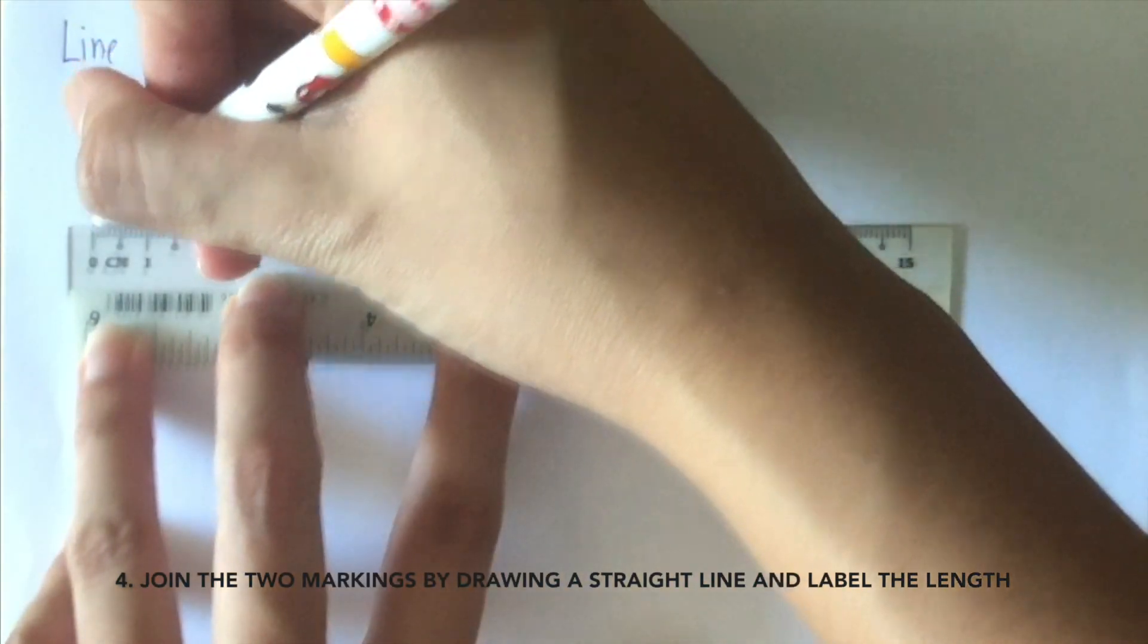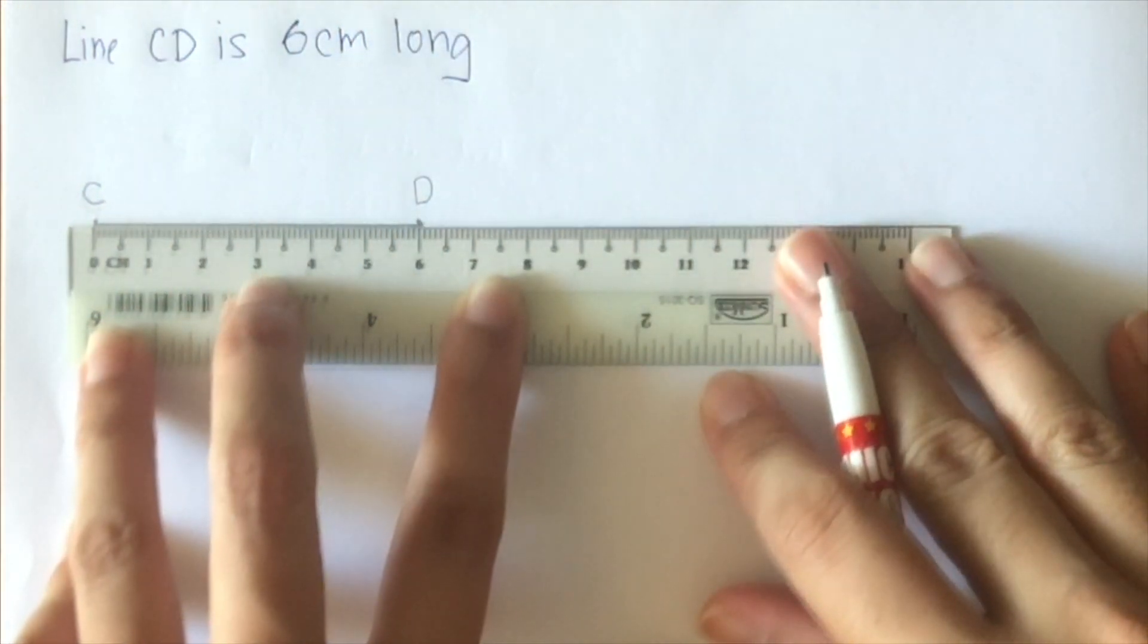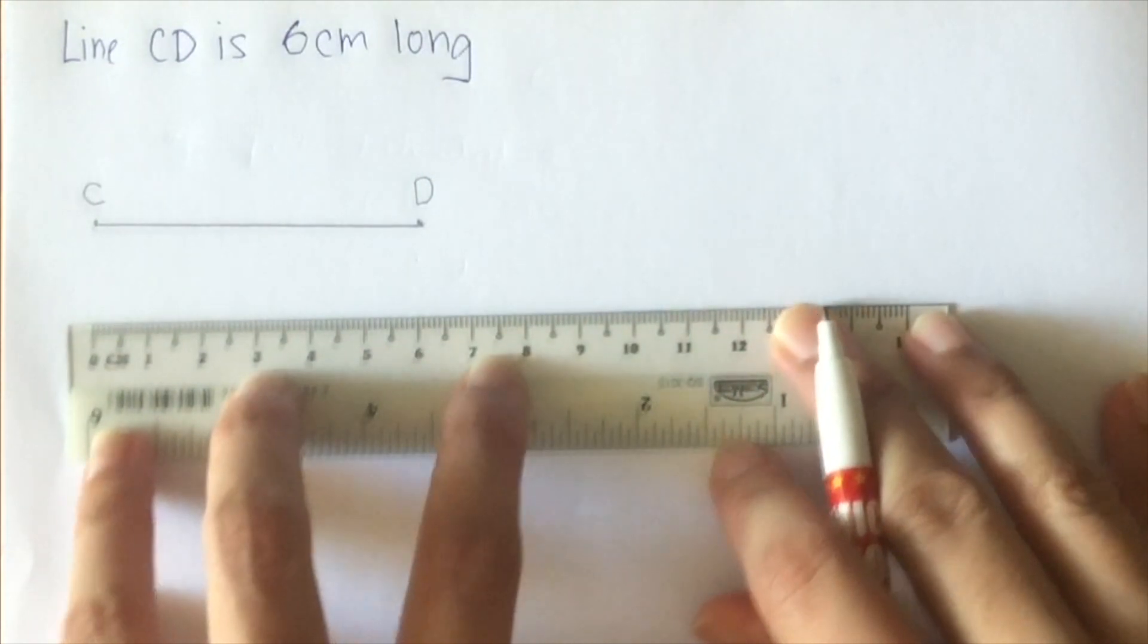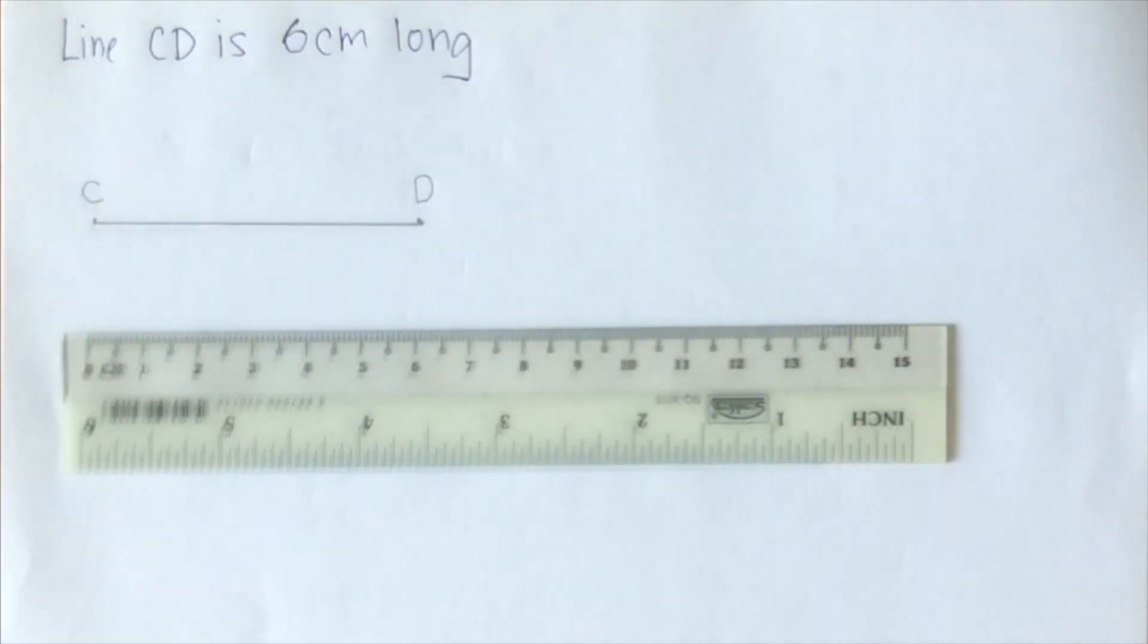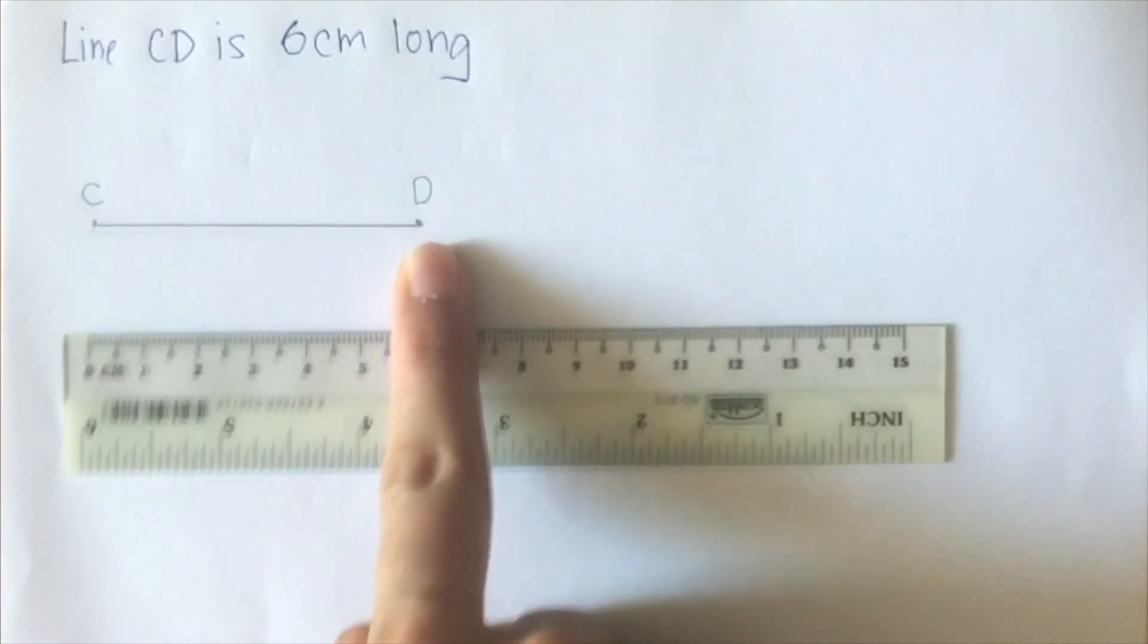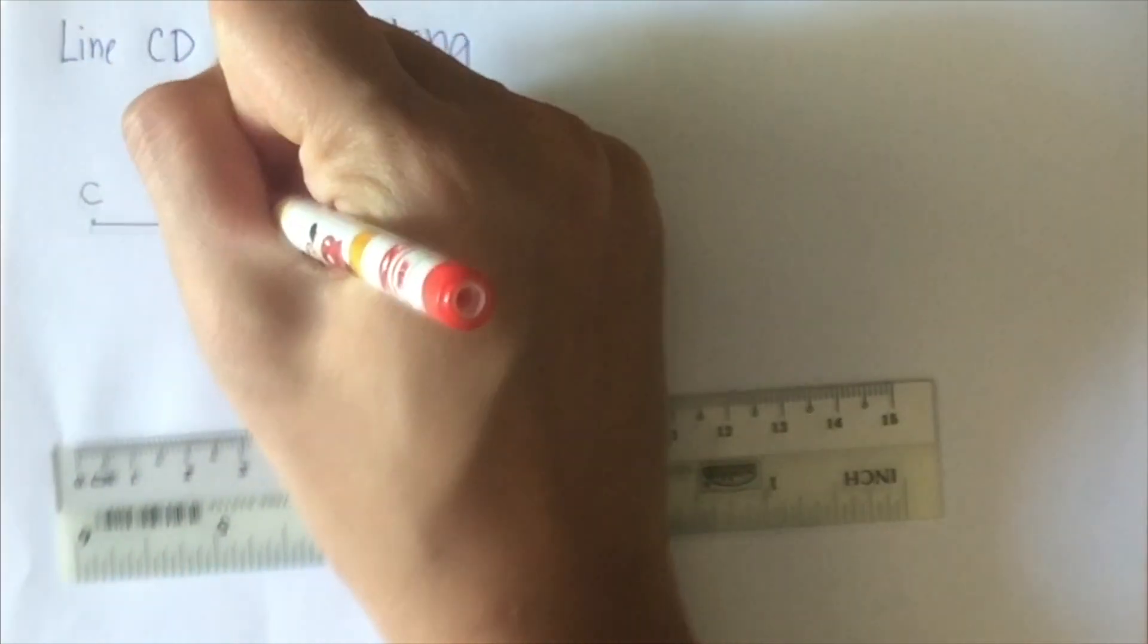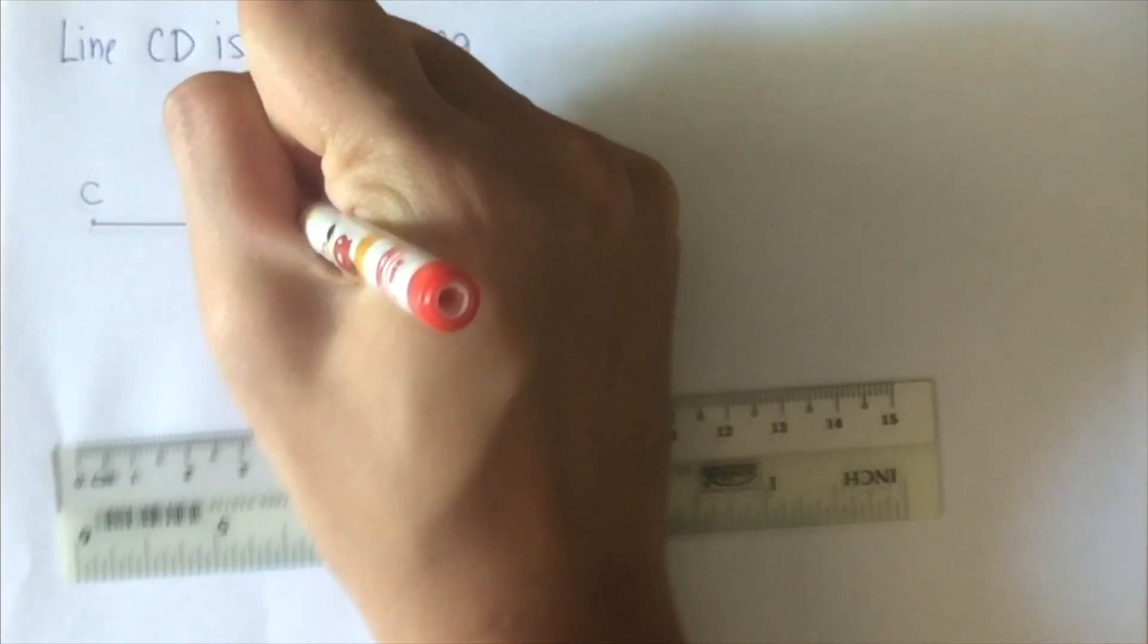Next we finish this drawing by joining both marks. Remember, your ruler needs to be firmly placed on the piece of paper. We cannot move, if not your line will not be straight. So we join the two lines and we remove our ruler. And there you have it, we have line CD. Again we remember that CD is six centimeters long, so we label it as six centimeter.